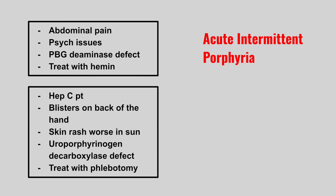Next, we have a patient who has hepatitis C and gets blisters on the back of the hand that worsen in the sun — it's a uroporphyrinogen decarboxylase defect and you treat it with phlebotomy. This is porphyria cutanea tarda.